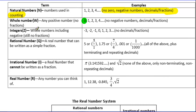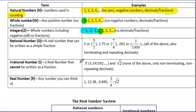Integers — notice it says all the whole numbers including negatives, still no fractions or decimals. So you can see the trend here. We had our natural numbers, then we added 0 for whole numbers, and now we have all the negatives included as well. Still no decimals or fractions.